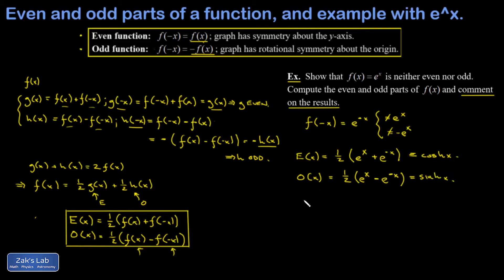Maybe to wrap things up here we'll just look at the graphs of all of these functions. So we just figured out e to the x is cosh x plus sinh x.